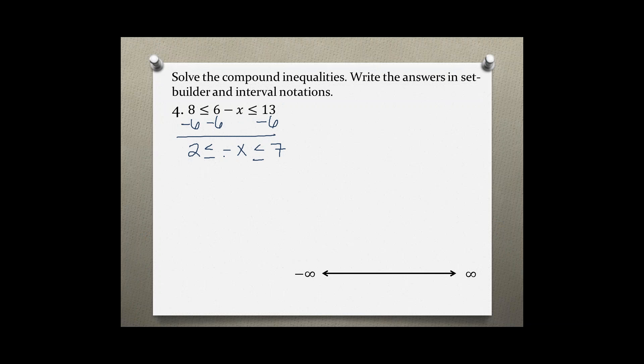But we need positive x, so if we multiply or divide every side by negative 1, that will give us a positive x. But whenever we multiply or divide by a negative in an inequality, we must flip the inequality signs.